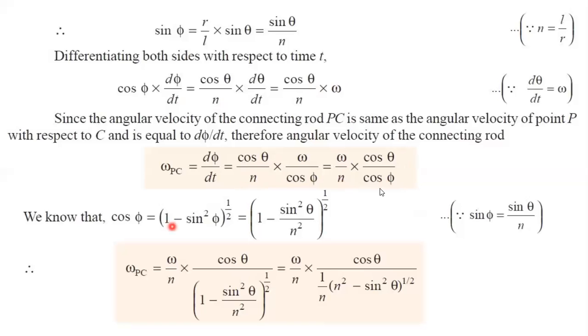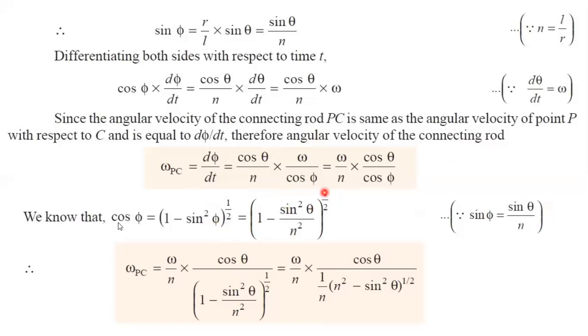Now we need to determine cos phi. Cos phi can be written as the square root of 1 minus sin squared phi, which is a basic trigonometry formula. Now I am going to replace sin phi with sin theta by n, as we derived earlier. So this equation can be written as the square root of 1 minus sin squared theta by n squared, which is raised to the power 1 by 2. Now substitute this cos phi value into the expression for omega PC.